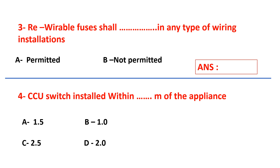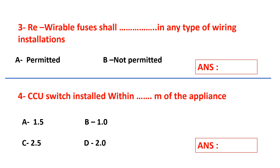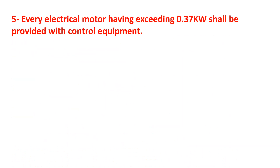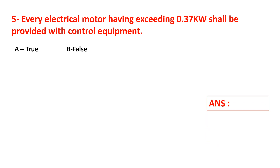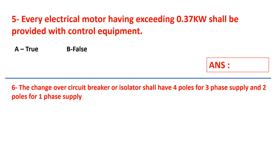Question number four: CCU switch shall be installed within dash meters of the appliances. Options: A) 1.5, B) 1, C) 2.5, D) 2. Select your answer. Question number five: every electrical motor exceeding 0.37 kilowatt shall be provided with control equipment — is this statement true or false?